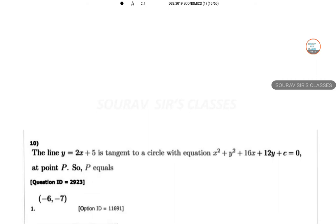Last question. Y equal to 2x plus 5 is tangent to a circle with equation x square plus y square plus 16x plus 12y plus c equals 0, at point P. So P equals what? So the line and circle meet at P. So let P equal x comma y.